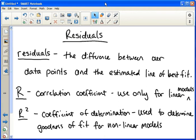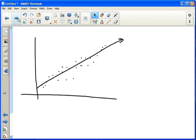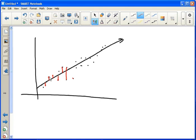Now residuals are the difference between our data points and the estimated line of best fit. So for example, if you look at this graph I have right here, the dots you see are our data, and the straight line is what we've estimated to be the line of best fit. Residuals are going to come from the distance between the data and the line, so they're going to measure all those distances.